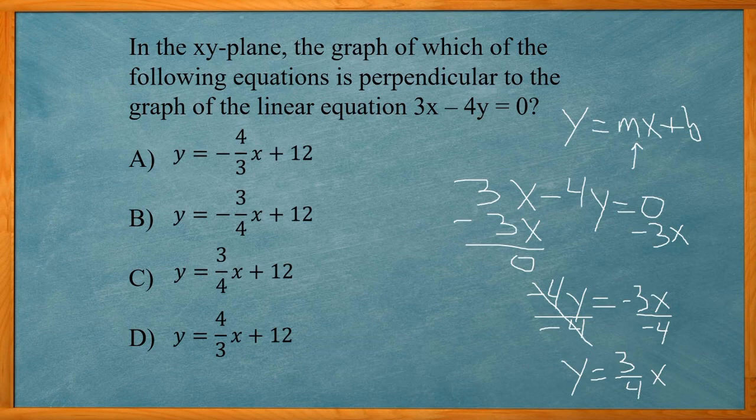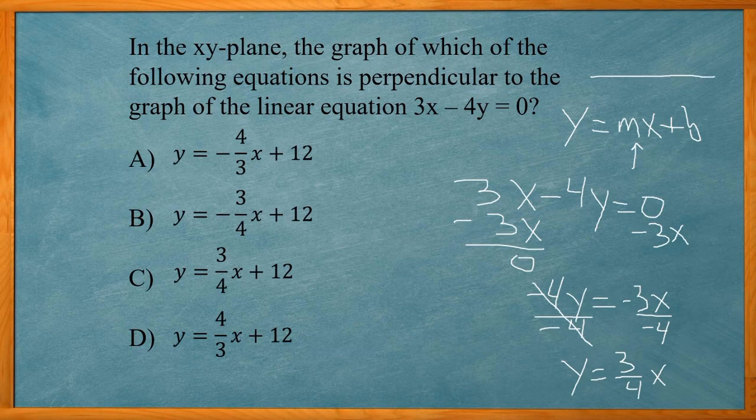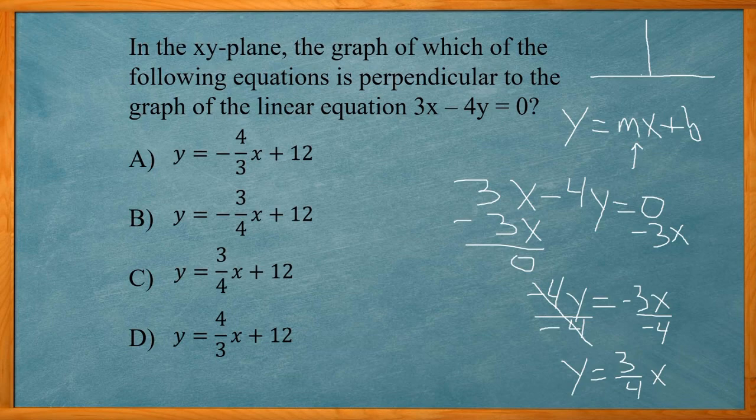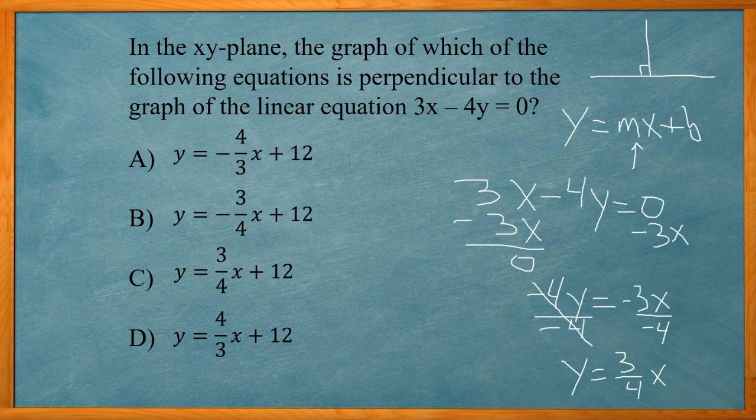Now a line that's perpendicular to that—if you have a line going this way, a perpendicular line would be another line that intersects that first line at a 90 degree angle. And when that happens, there's a special relationship between the slopes of these two lines.